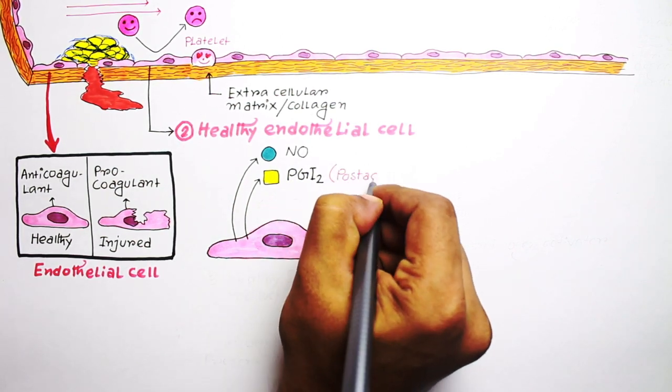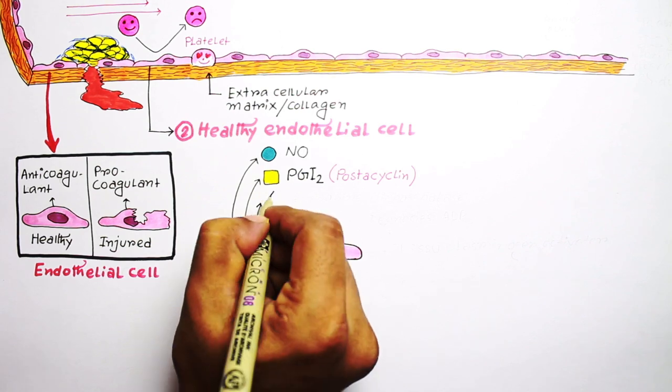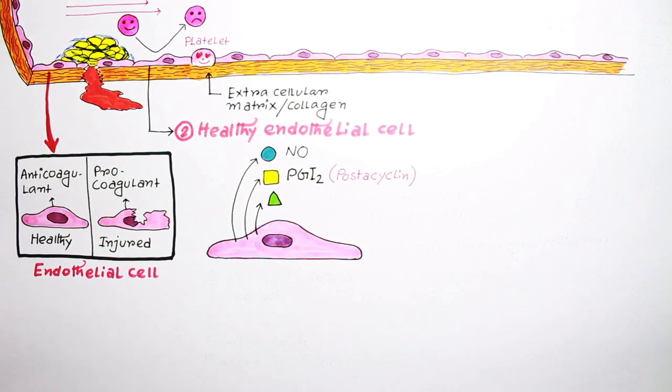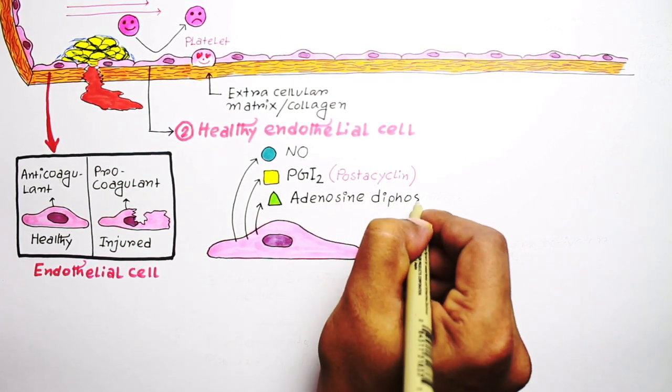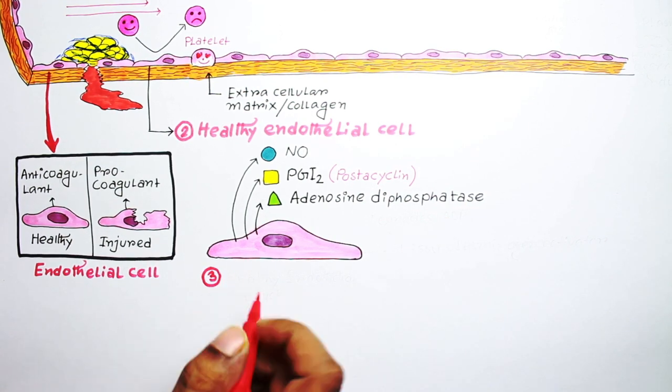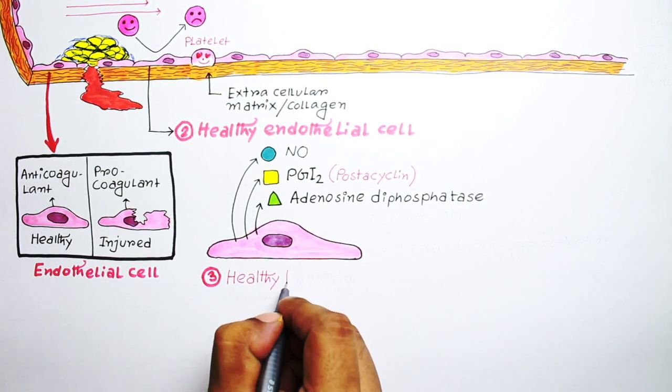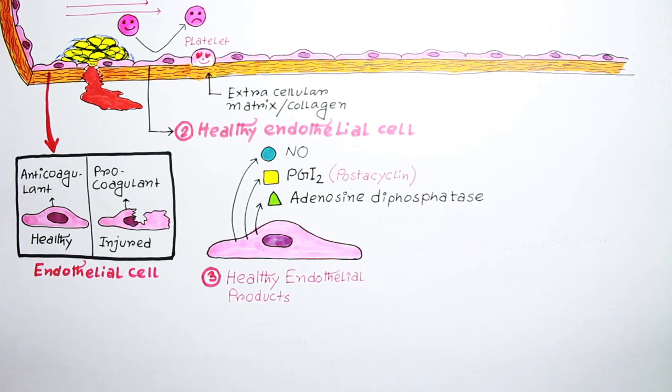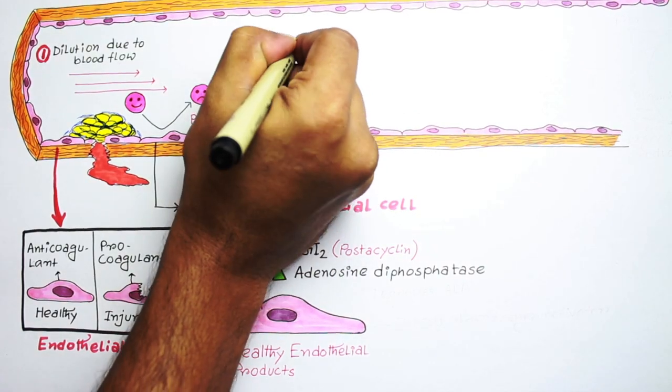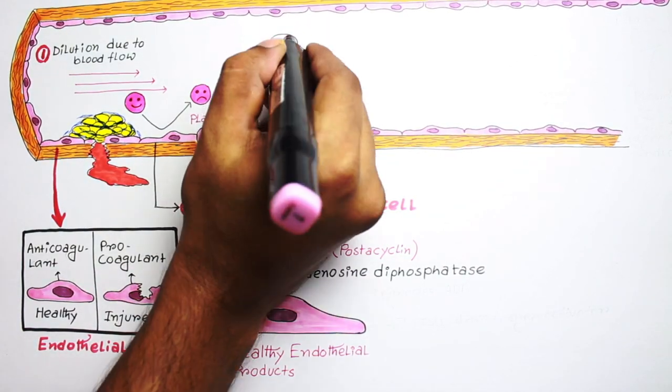They are anti-platelet agents. They don't allow platelets to stick with each other and also with the endothelium. What they do actually is inhibit some receptors on the platelet surface. For platelets to stick to the endothelial surface, their surface receptors should be in an active state.